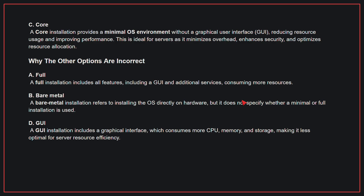Why the other options are incorrect? A. Full — a full installation includes all features, including a GUI and additional services, consuming more resources. B. Bare Metal — a bare metal installation refers to installing the OS directly on hardware, but it does not specify whether a minimal or full installation is used.